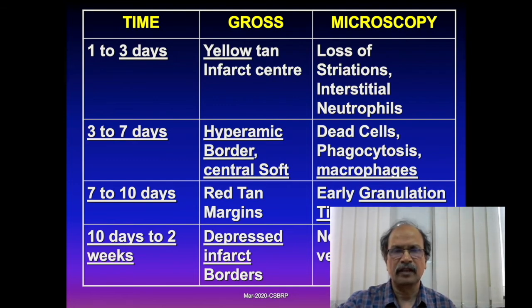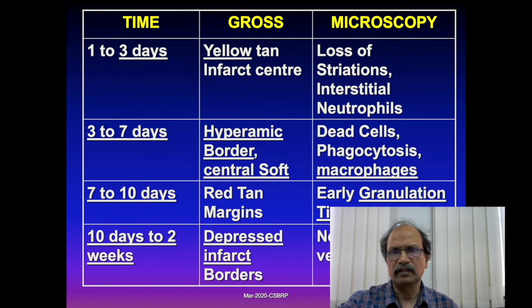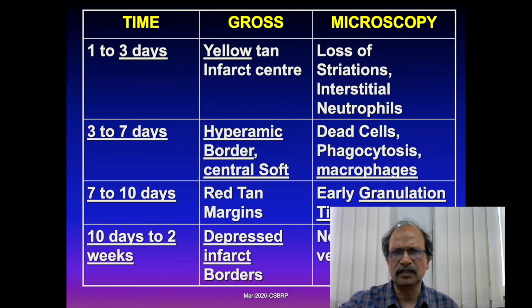After one week, granulation tissue forms in the infarcted myocardial area. After ten days to two weeks, the area becomes depressed with new blood vessels and collagen forming. A useful memory technique: correlate with general pathology inflammation — the earliest cell arriving at the injury site is the neutrophil.